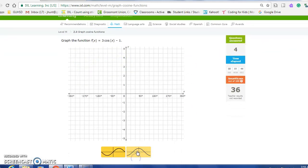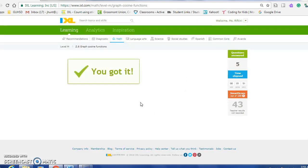3 cosine, so I go 3 high. Make it solid, down 1. Make it solid, press enter.